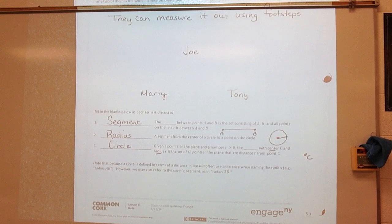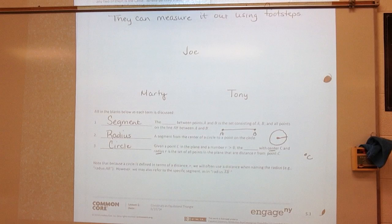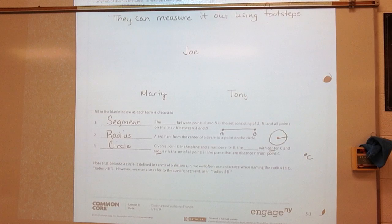Note that because a circle is defined in terms of distance R, we will often use a distance when naming the radius. Example, radius AB. However, we may also refer to a specific segment as in radius segment AB.